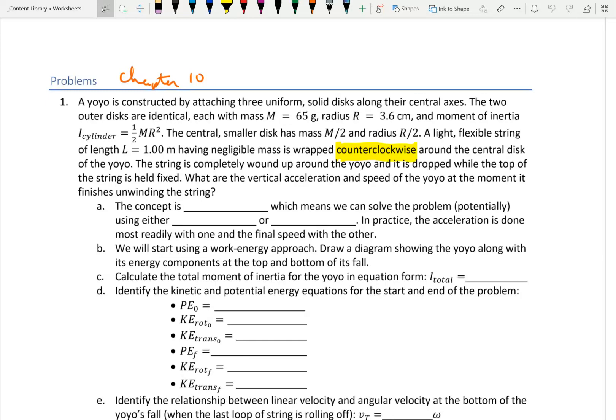So, anything that's accelerating, either linear or angular, or both accelerations, is a dynamics problem. Now, in this case, it involves rotation. So, because it's accelerating and it has rotation, then it's got to be rotational dynamics. Which means we can solve the problem potentially either using work energy, the second method we learned, or Newton's second law, the first method we learned. In practice, the acceleration is done most easily with one and the final speed with the other. I chose these two things so I would have a reason to do both ways.